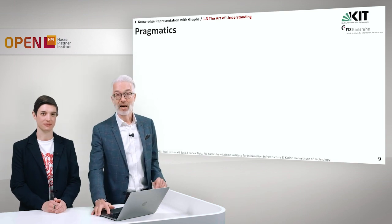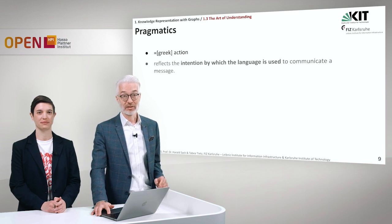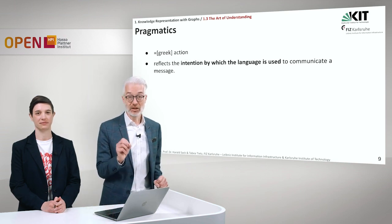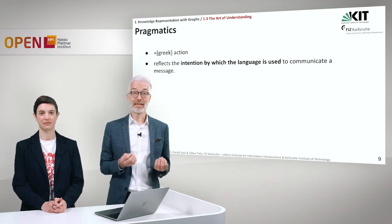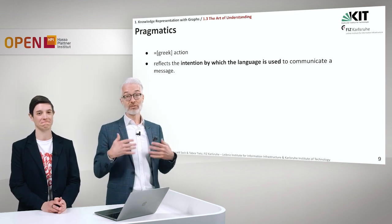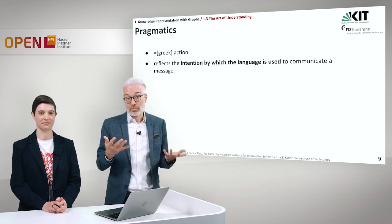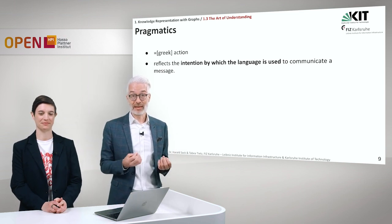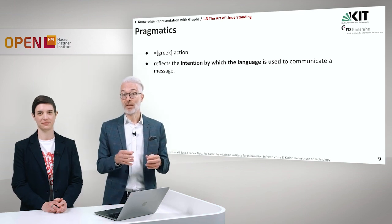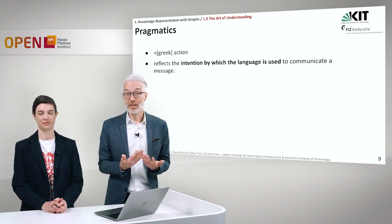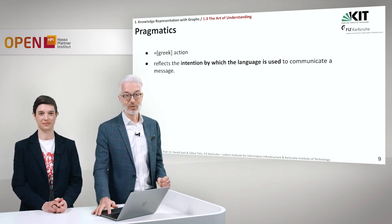In addition, we have pragmatics. Pragmatics also comes from Greek and it means action. It reflects the intention by which language is used to communicate a message. So if I say something, I can be in full earnest, so it can be really true. On the other hand, I might have the intention to make fun of somebody or to be sarcastic. Then the intention is changed and also the meaning of what I originally want to convey is changed. This is another layer which introduces further ambiguity into language.